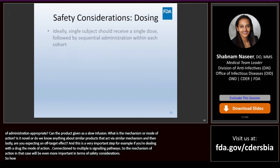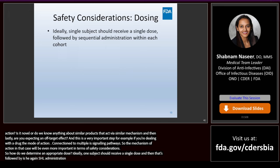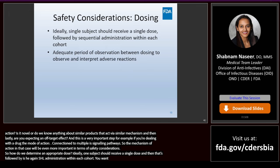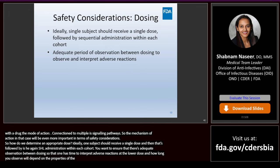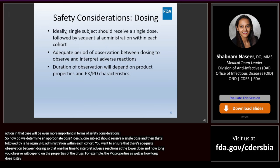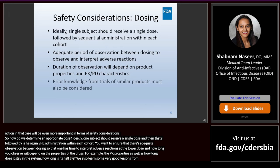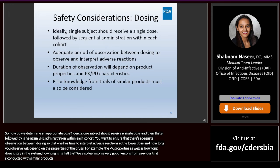How do we determine an appropriate dose? Ideally, one subject should receive a single dose followed by sequential administration within each cohort. You want to ensure adequate periods of observation between dosing so that one has time to observe and interpret adverse reactions at the lower dose. How long you observe will depend on the properties of the drug — the PK properties and how long it stays in the system, including its half-life. We also learn good lessons from previous trials conducted with similar products, and prior knowledge can be helpful.